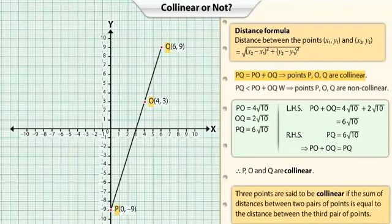Therefore, three points are said to be collinear if the sum of distances between two pairs of points is equal to the distance between the third pair of points.